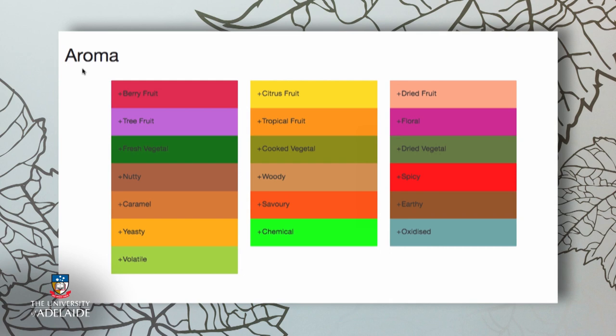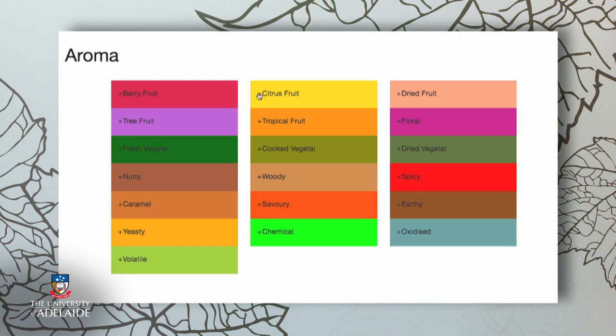What can you smell? Try not to use descriptors such as fruity and oaky, as these are broad terms that probably describe most wines. Instead, if you can smell fruit, think about the type of fruit. Is it citrus, tropical fruit, or perhaps berry fruit? If it's citrus, can you differentiate lemon, grapefruit, or lime?